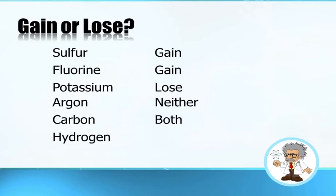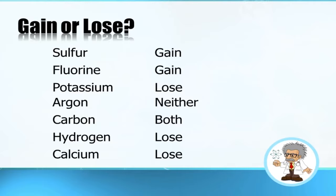Hydrogen is going to lose — it only has one electron and tends to lose, but not always. When hydrogen bonds with lithium or other alkali metals, it tends to gain electrons and takes a negative charge. But usually hydrogen loses. Calcium will lose two instead of gaining six.